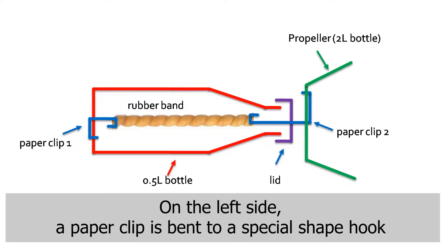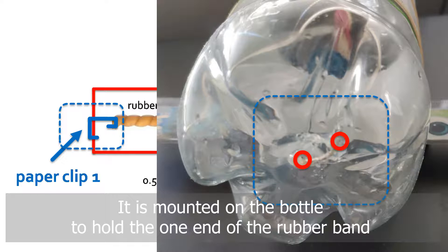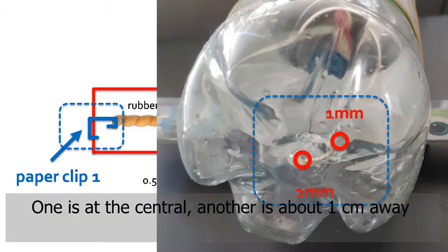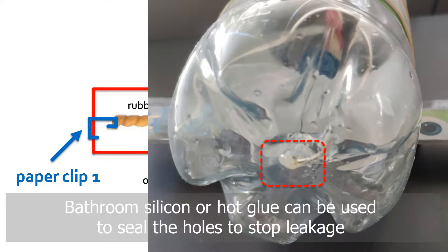On the left side, a paper clip is bent to a special shape hook. It is mounted on the bottom to hold one end of the rubber band. Two one-millimeter holes are required to mount the paper clip. One is at the center, another is about one centimeter away. Those two holes are used to stop the hook from free turning. Bathroom silicone or hot glue can be used to seal the holes to stop leakage.